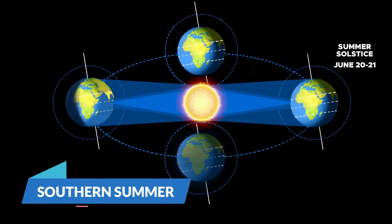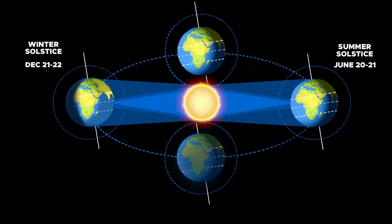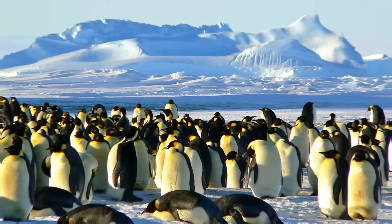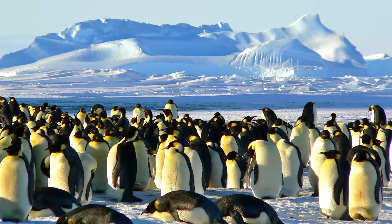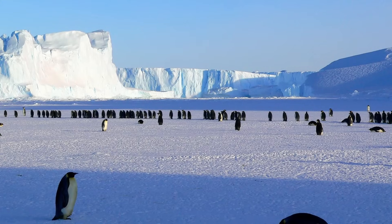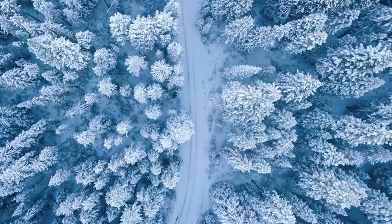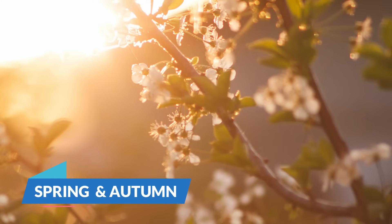In the same way, summer happens in the southern hemisphere when the sun rises vertically above the Tropic of Capricorn on December 22nd, and the Antarctic circle continuously receives sunlight for six months. When this is happening in the southern hemisphere, it's winter in the northern hemisphere.